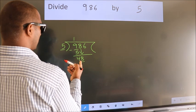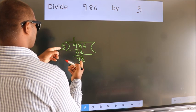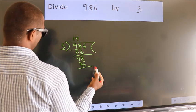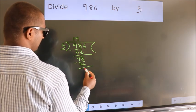A number close to 48 in the 5 table is 5 nines, which is 45. Now we subtract. We get 3.